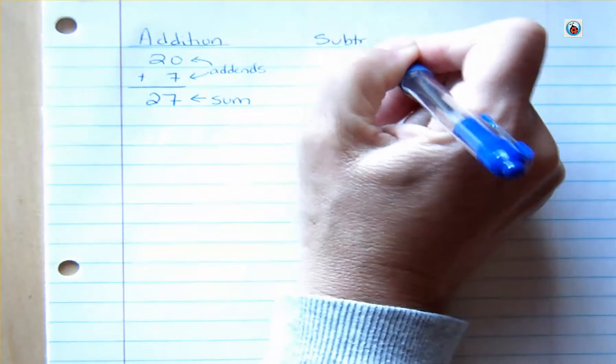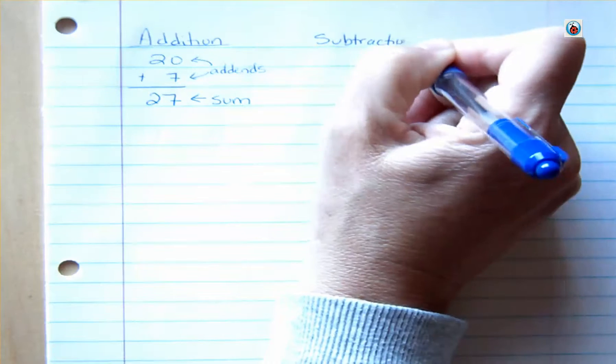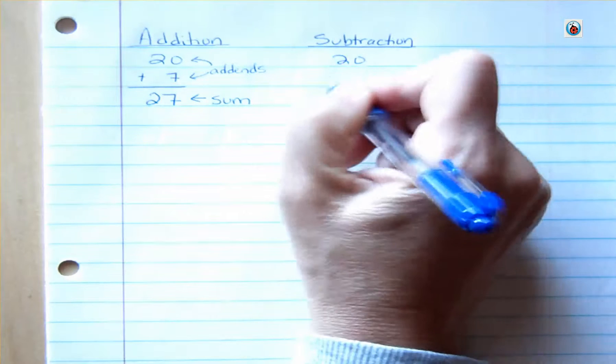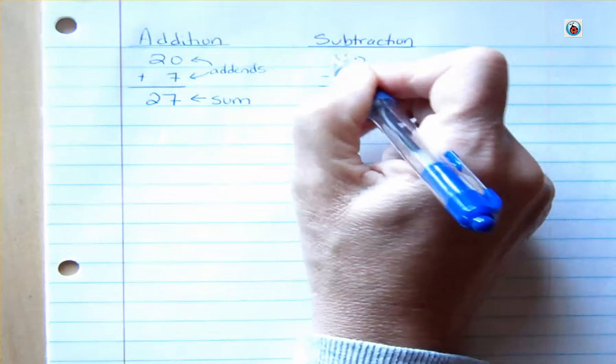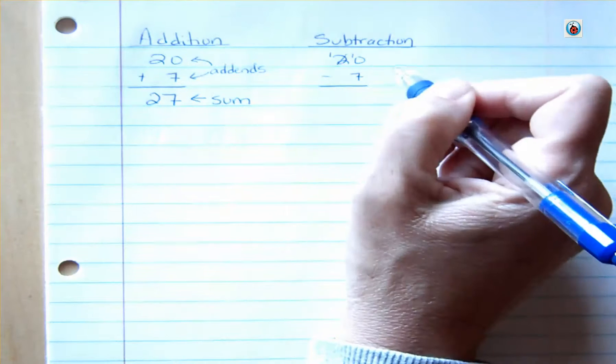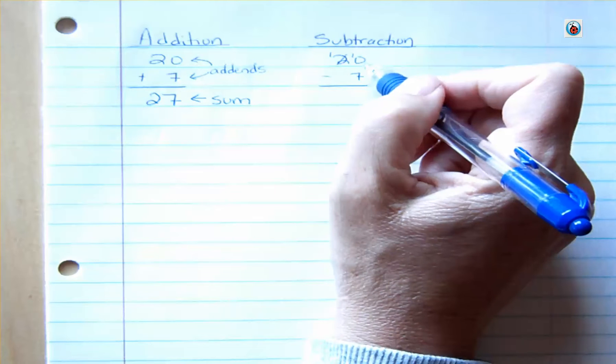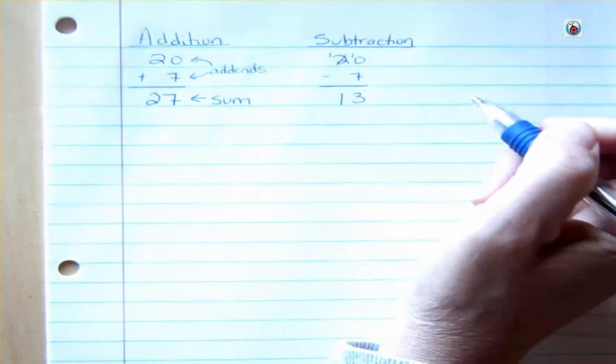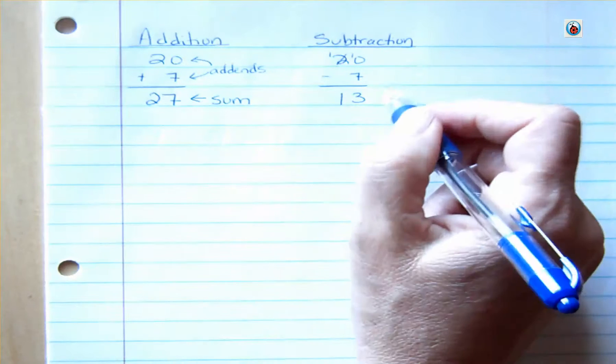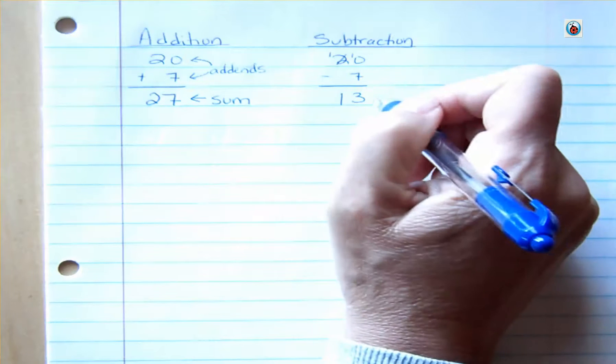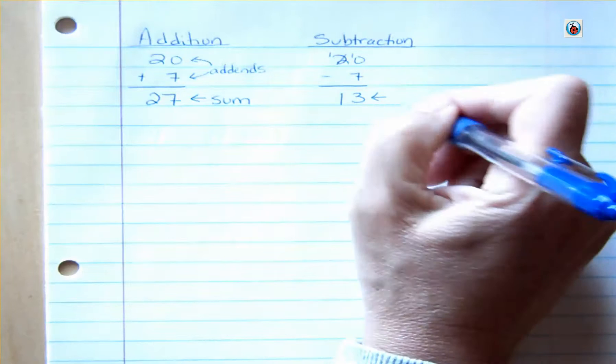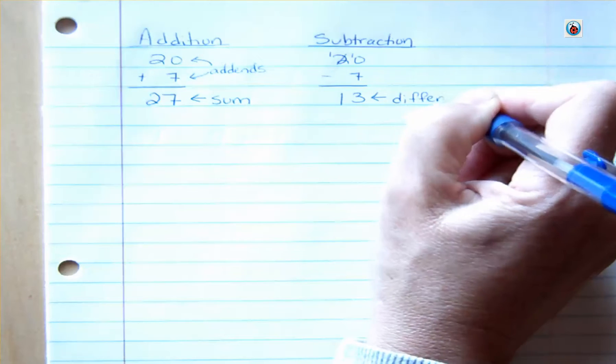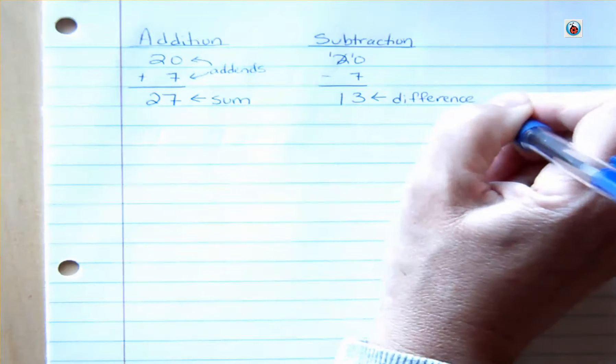And then we have subtraction. For subtraction, if you had 20 minus 7, remember you'd have to borrow, and you'd make that 10. And 10 minus 7 is 3, you get 13. Remember the borrowing thing. That's something that you should have coming in, so I'm not going to spend a lot of time on just the basic subtraction. The answer to a subtraction problem, though, is what I want to get to, and that is that it's called a difference.